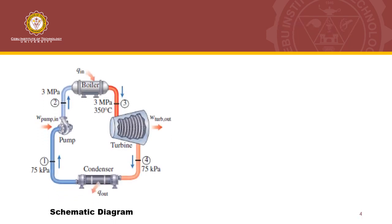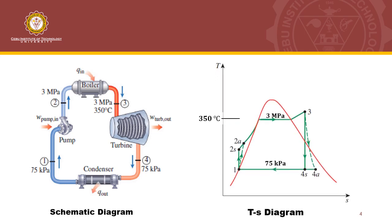We will draw the schematic diagram as well as the TS diagram of this cycle. Since this is an actual Rankine Cycle, we consider the irreversibilities especially in the pump as well as the turbine, since these two represent the greatest irreversibility in this Rankine Cycle. That is why we have point 1 here, and after the isentropic compression, the actual enthalpy at the exit of the pump is no longer at 2S but is at 2A. Then it is heated in the boiler and reaches point 3, the highest point in this cycle.